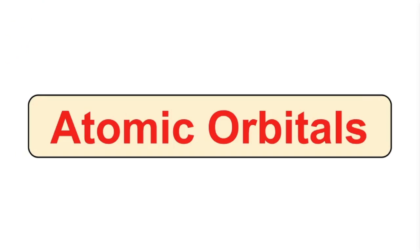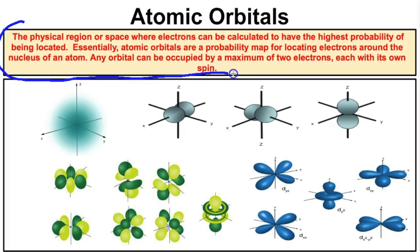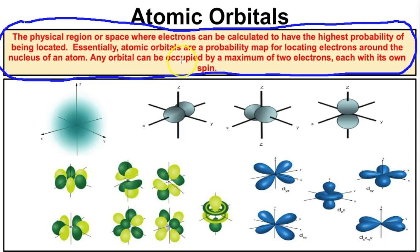Hey, you guys, this is Mr. Millings and today we're going to learn about atomic orbitals. Atomic orbitals are the physical region or space where electrons can be calculated to have the highest probability of being located. Essentially, atomic orbitals are a probability map for locating electrons around the nucleus of an atom, and any orbital can be occupied by a maximum of two electrons, each with its own spin.